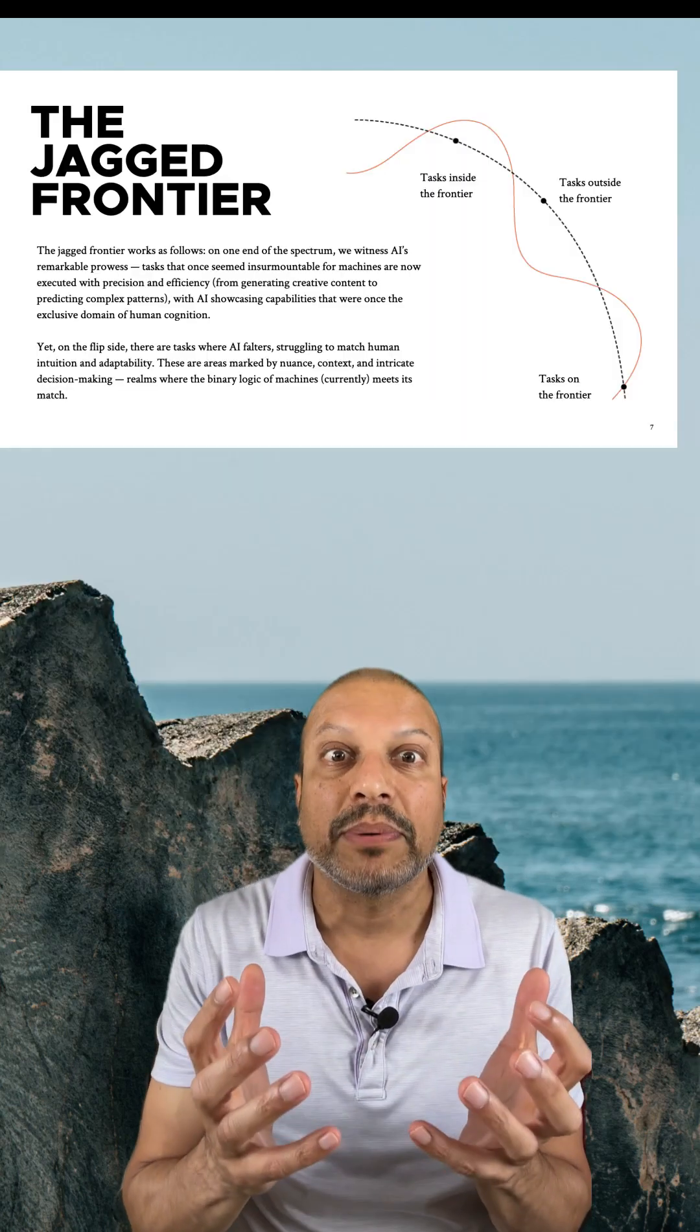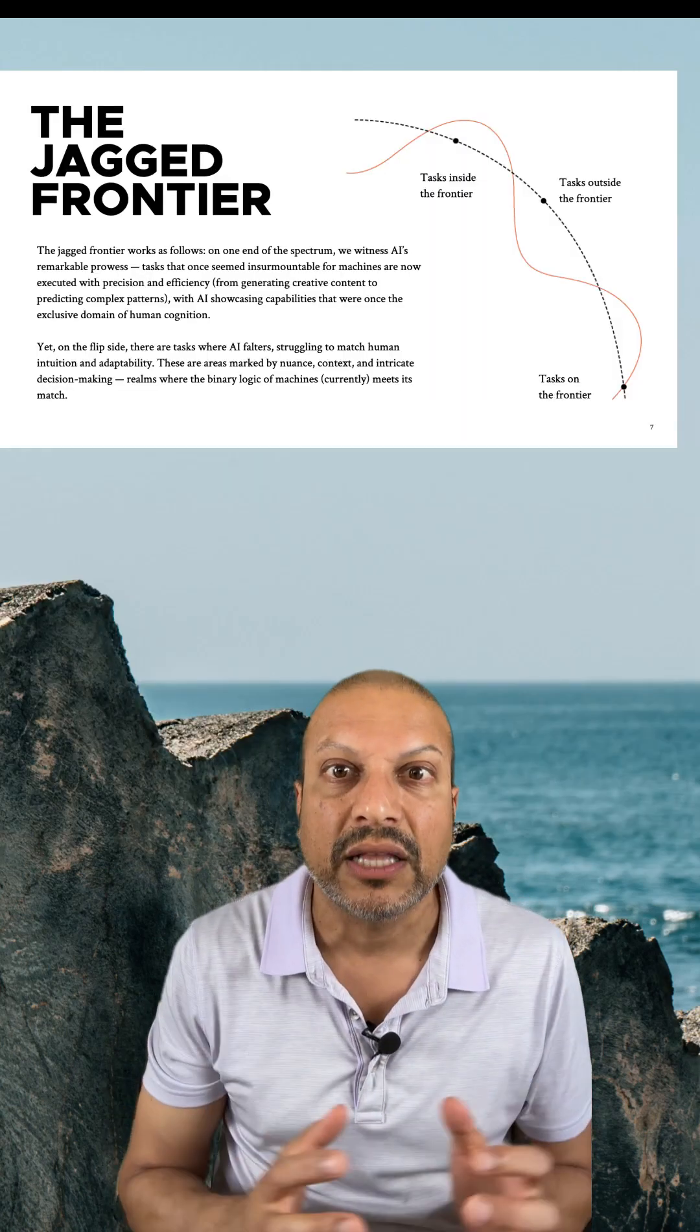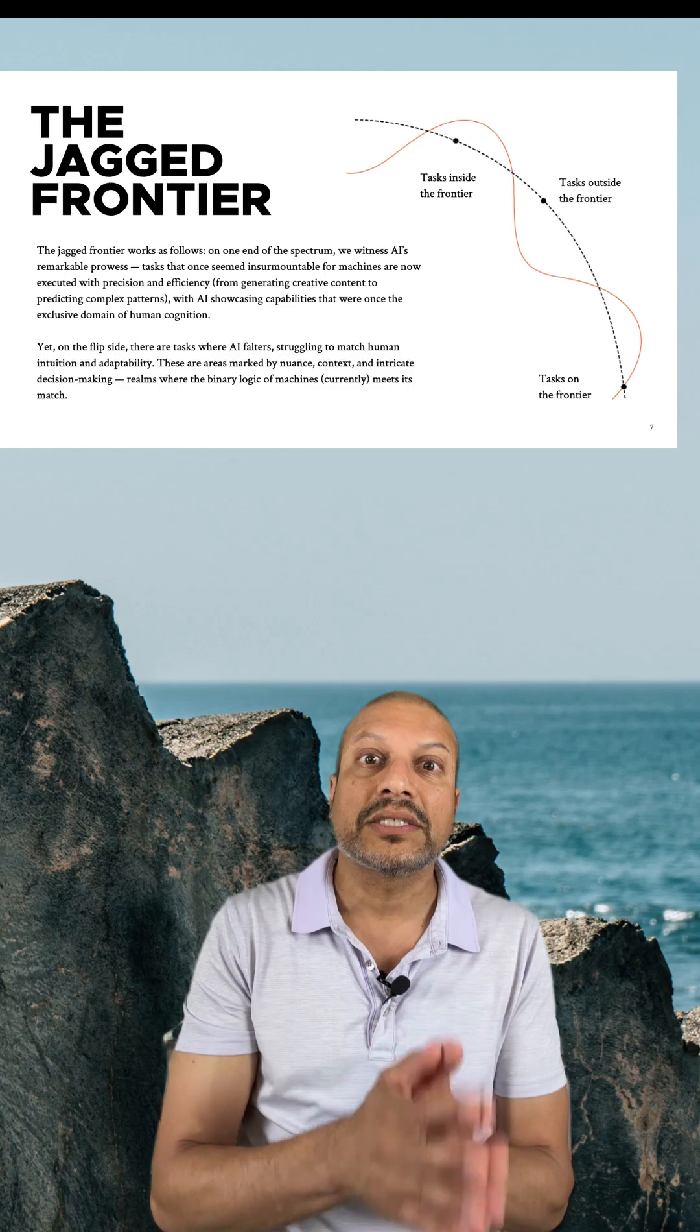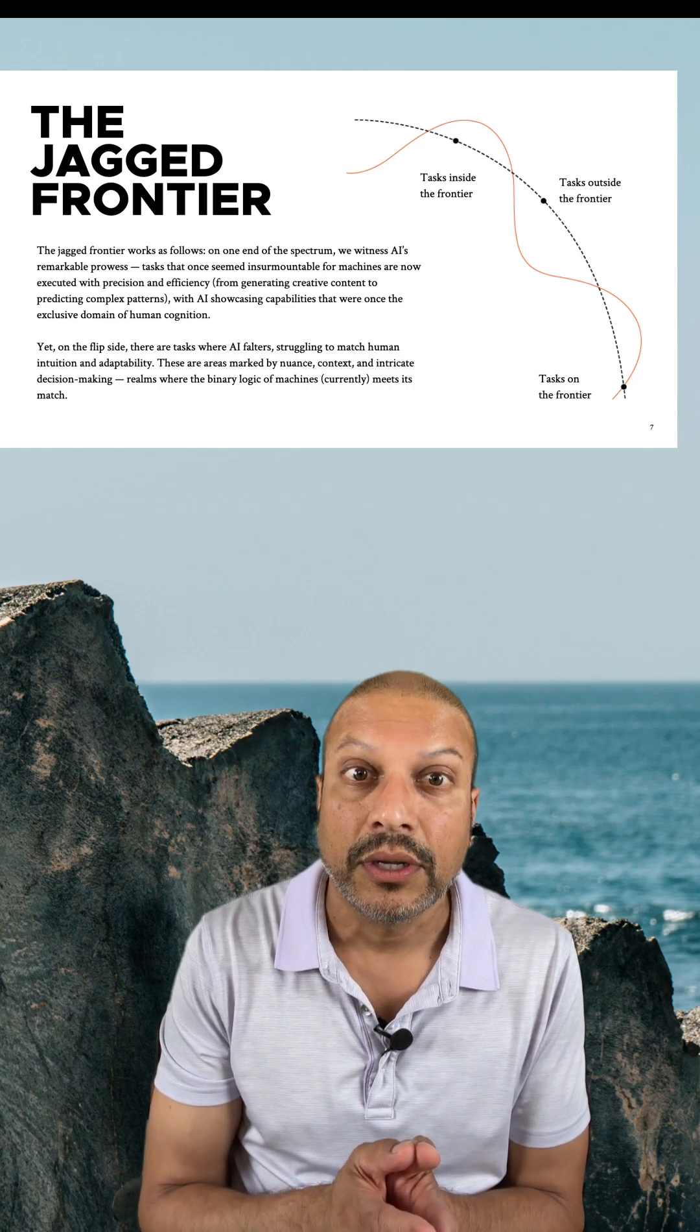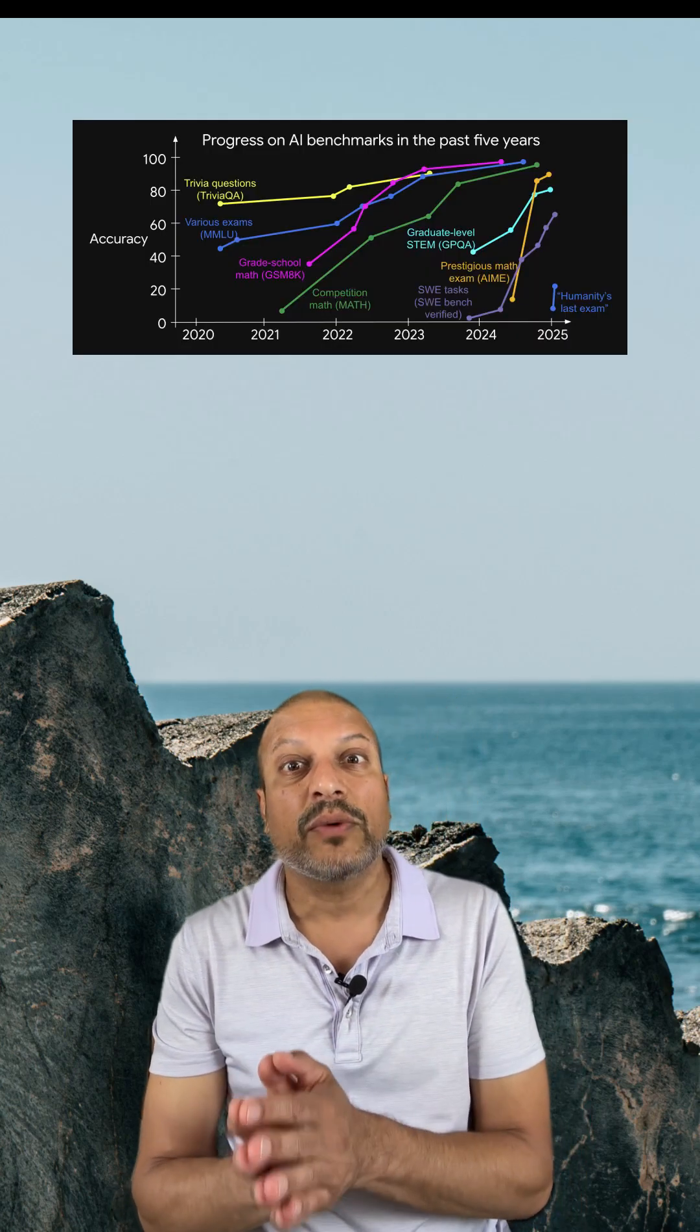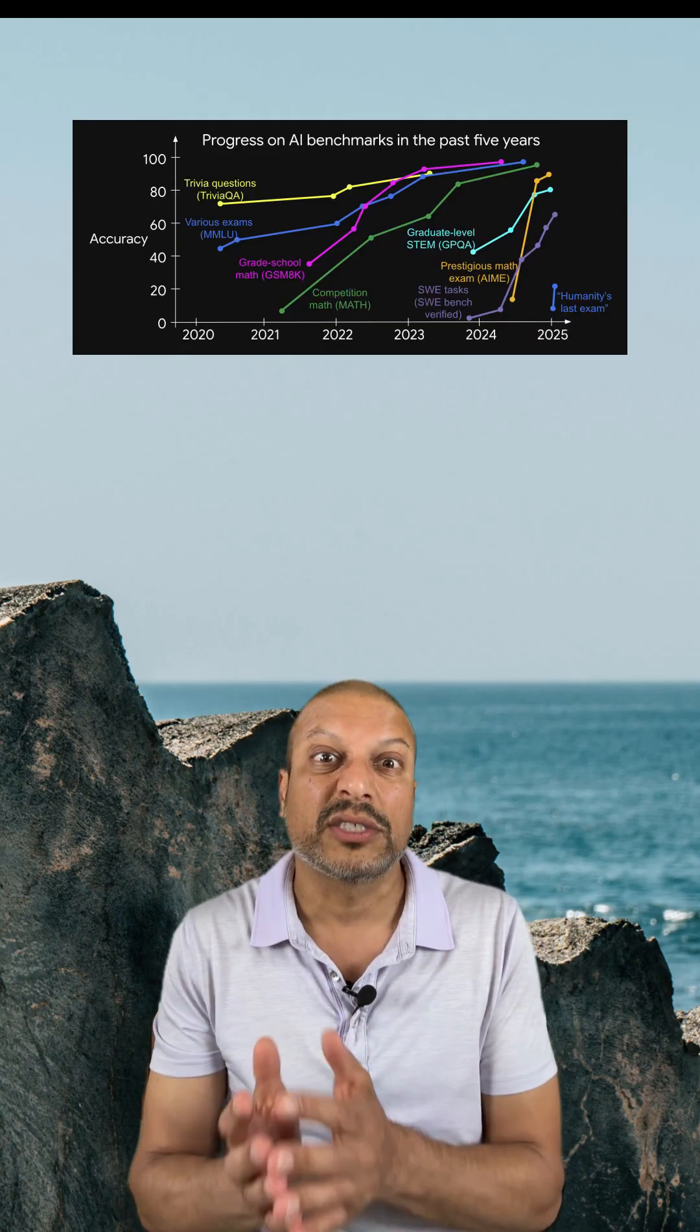This also explains the jagged edge of intelligence, where AI is going to excel where verification is clear, but it's going to stall or slow down where feedback is slow, costly, or subjective.